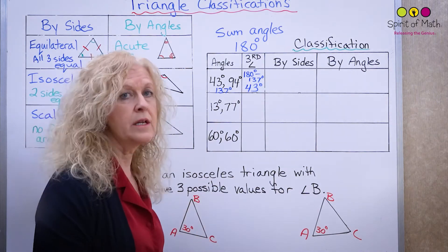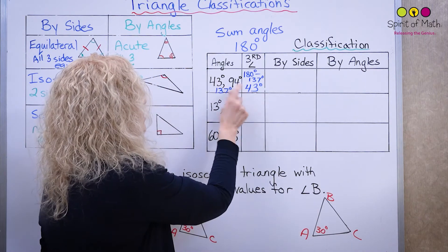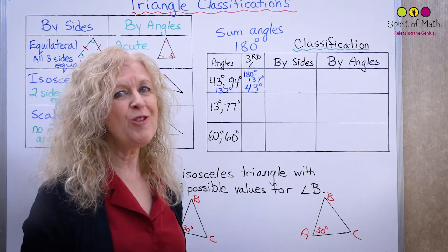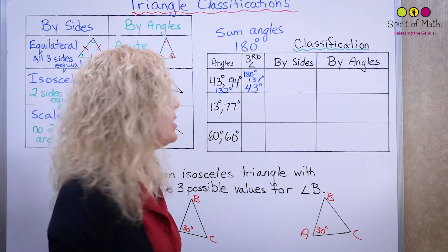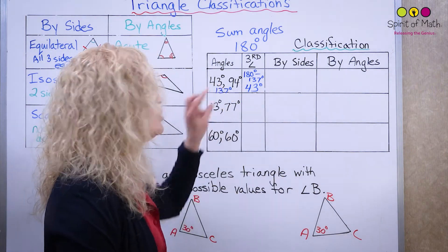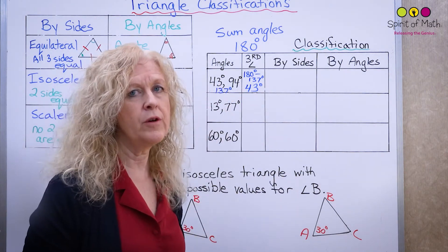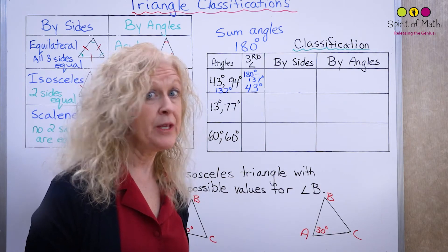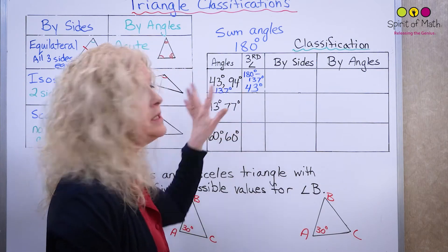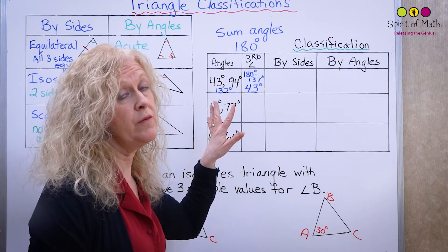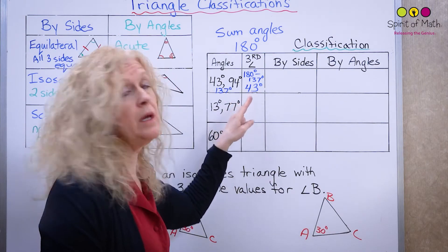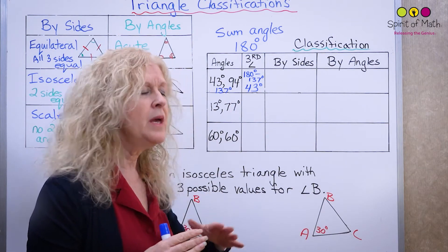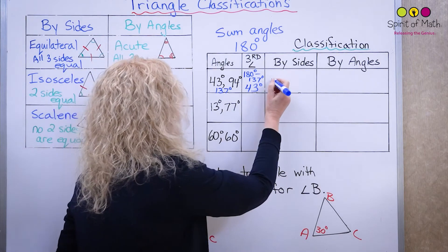That's kind of cool — you've got two angles at 43 degrees. For classification by sides: because these two angles are both 43 degrees, the two opposite sides must be the same, so this is isosceles.